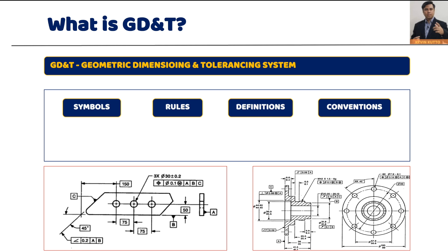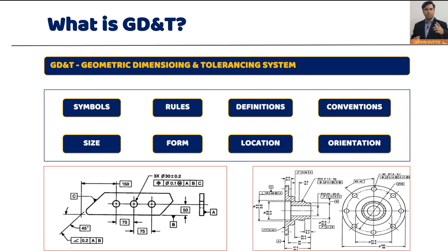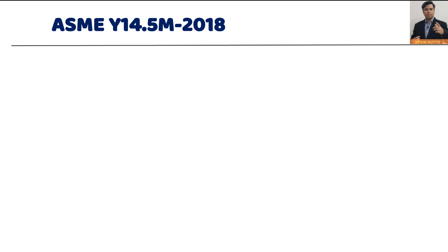GD&T is also a mathematical language to describe the size, form, location, and orientation of the features of a part. It is also called a design philosophy, because it guides us on how to design and dimension the parts.